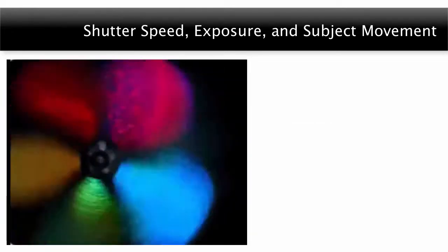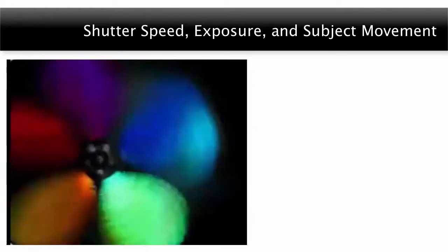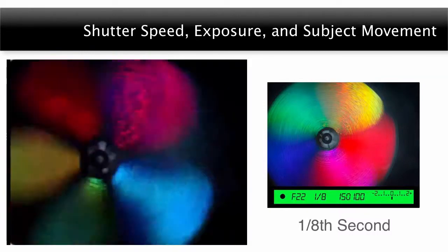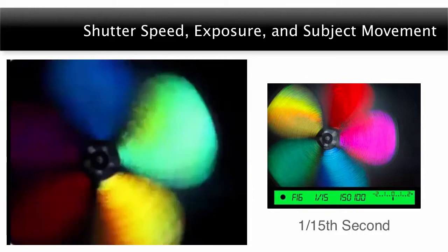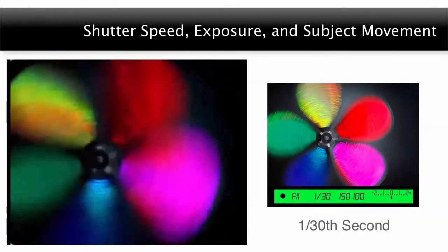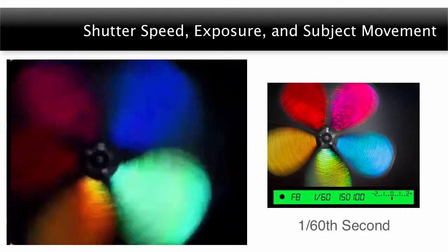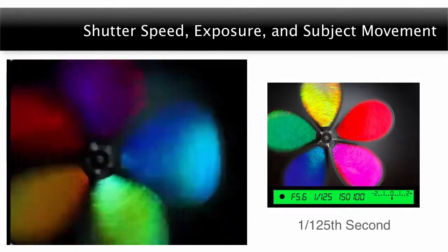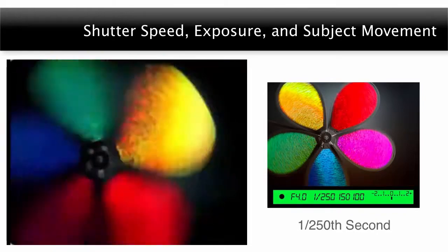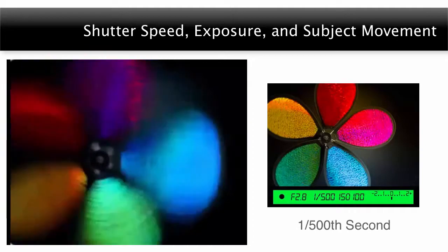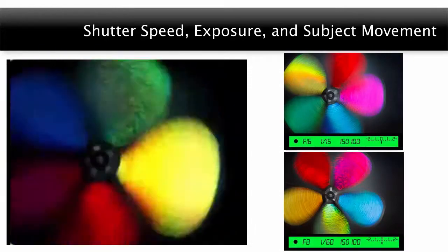On the screen, you can currently see a little pinwheel spinning around. Now let's take a look at some images that we have taken of that same pinwheel moving. Some were taken with slow shutter speeds all the way up to faster shutter speeds. The 1/15th of a second image shows more motion than the 1/60th of a second image.